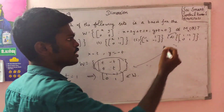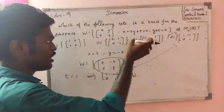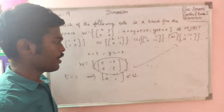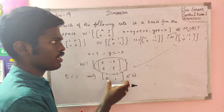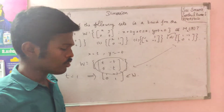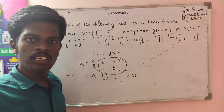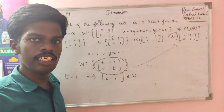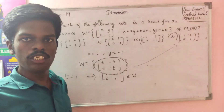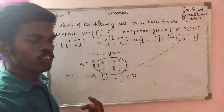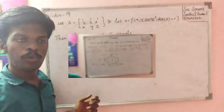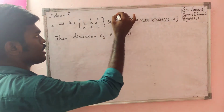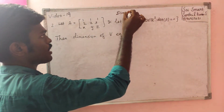If you want to eliminate all the variables, try to eliminate all the variables and try to transform all the variables into a single variable. If you want to eliminate all the variables, you will get the same dimension.